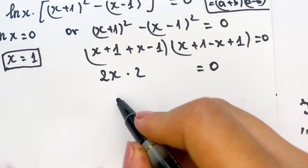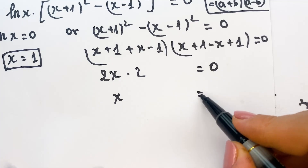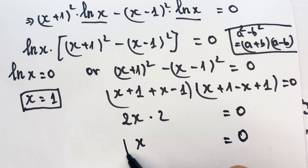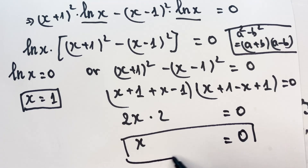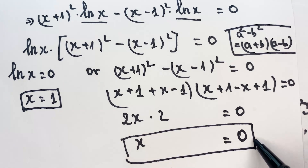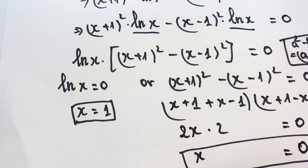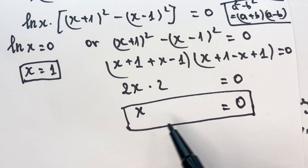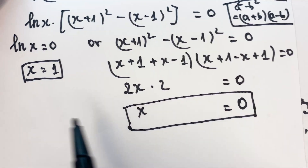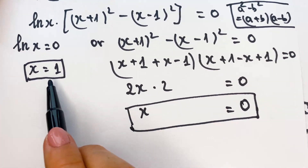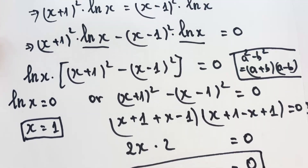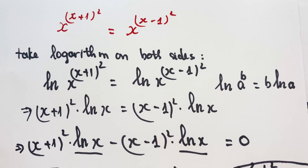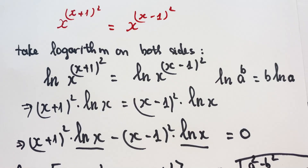So we can say the value of x equals 0 as well. For this equation we have two values of x: x₁ equals 1 and x₂ equals 0. Thank you for watching my video, don't forget to subscribe to my channel. Love you all, bye bye!